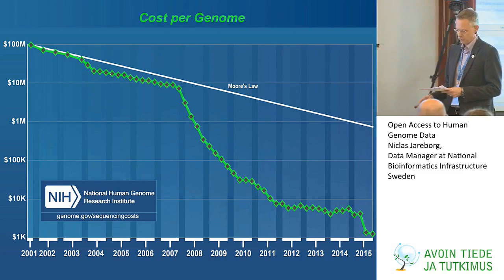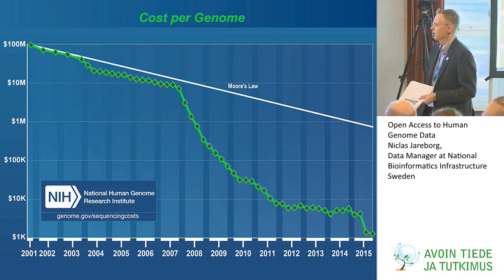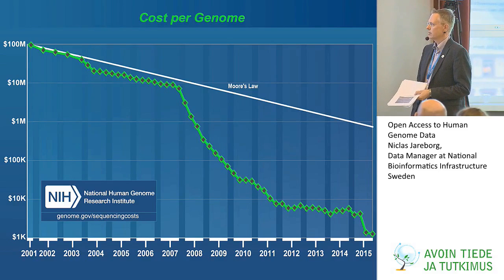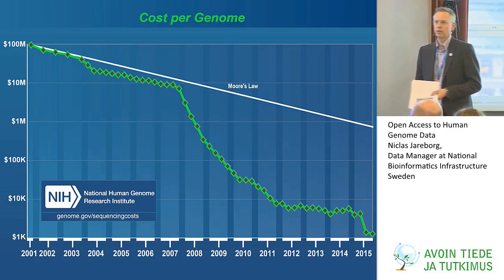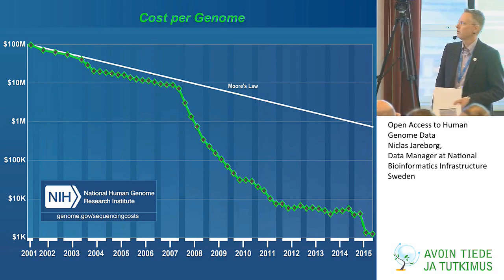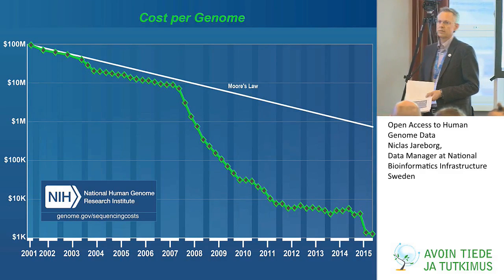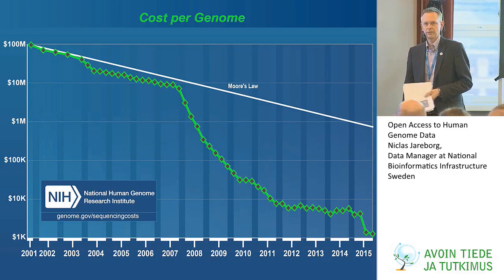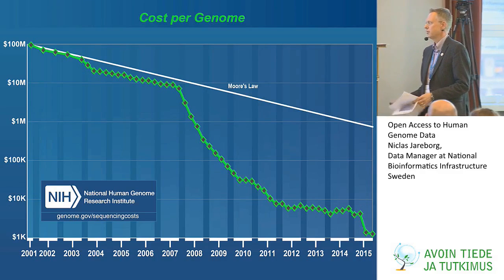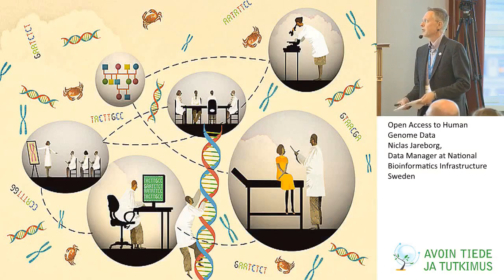This has caused the cost per genome to fall through the floor. Nowadays we're down at the thousand dollar level to determine the genome sequence of a human, and it's done in two days. So there's a fantastic, dramatic improvement there.